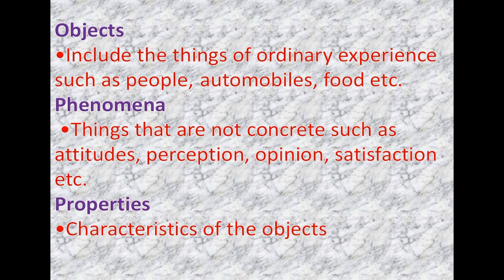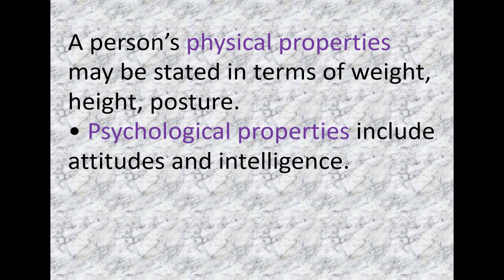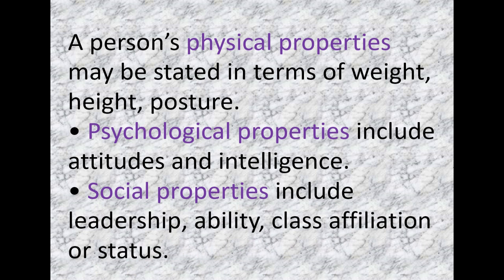Properties are the characteristics of objects. A person's physical properties may be stated in terms of weight, height, and posture. Psychological properties include attitudes and intelligence. Social properties include leadership ability, class affiliation, or status.